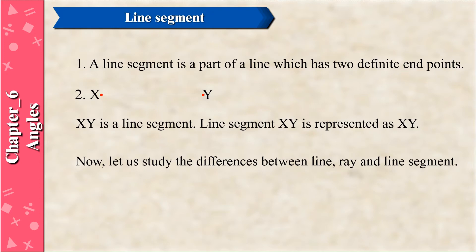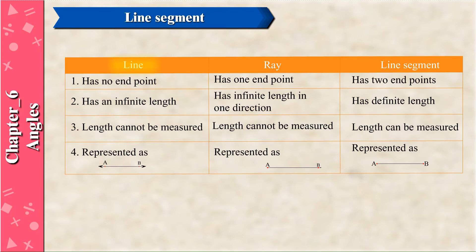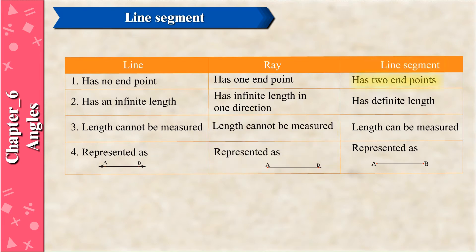Now let us study the differences between line, ray, and line segment. A line has no end points and has infinite length; its length cannot be measured, represented as AB. A ray has one end point and has infinite length in one direction; its length cannot be measured, represented as AB. A line segment has two end points, has definite length; its length can be measured, represented as AB.